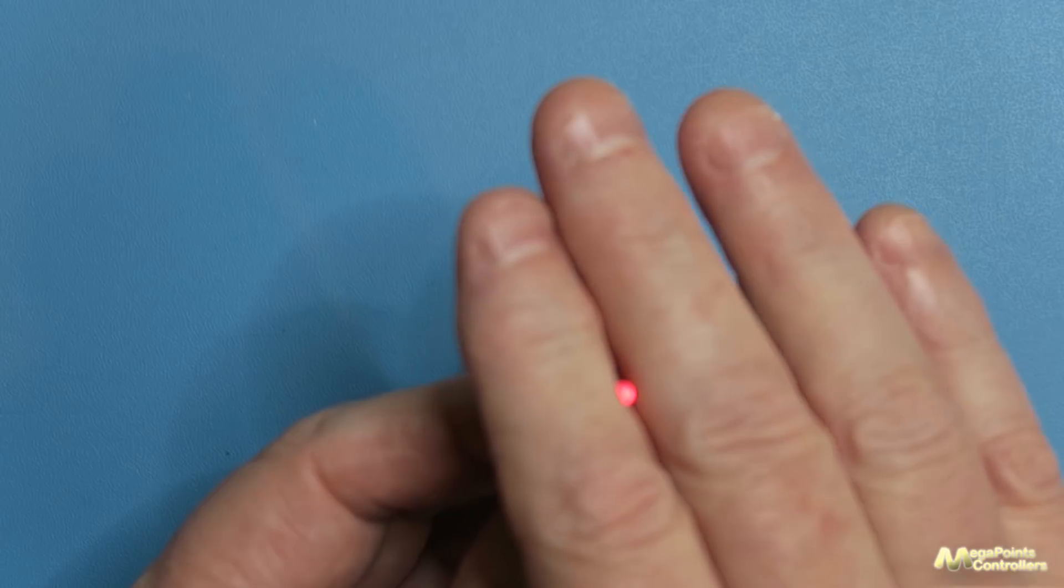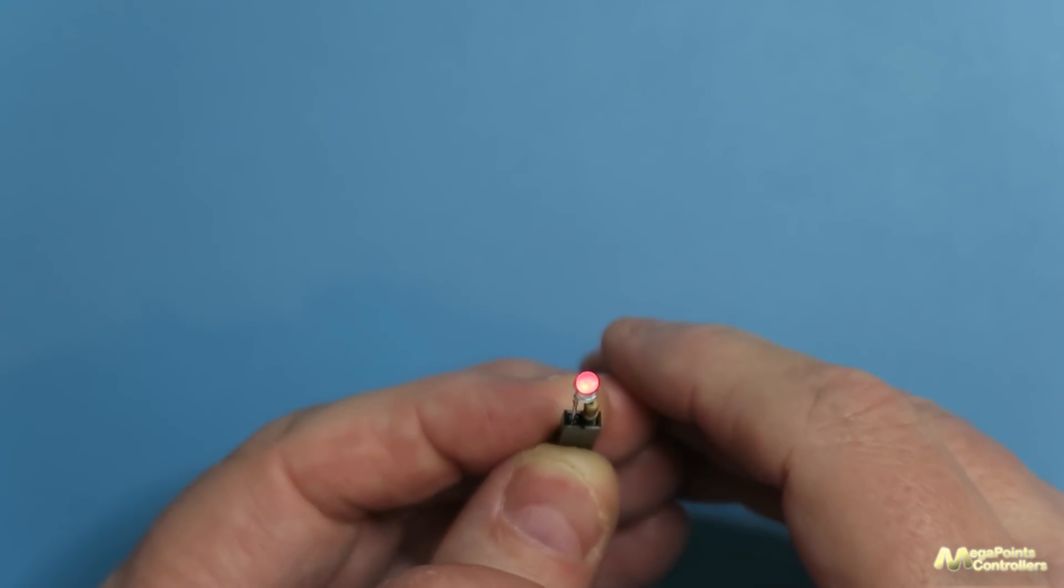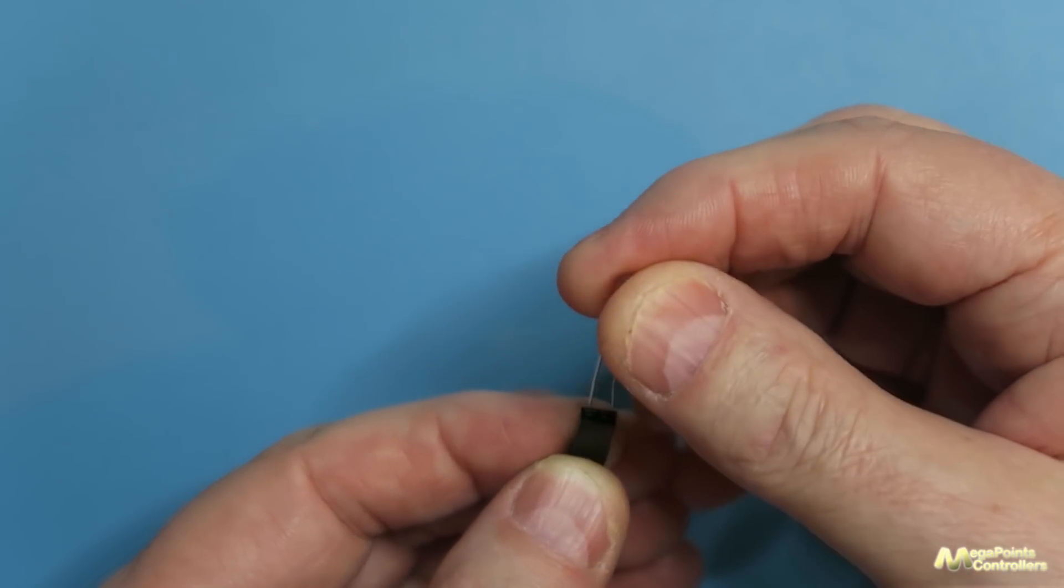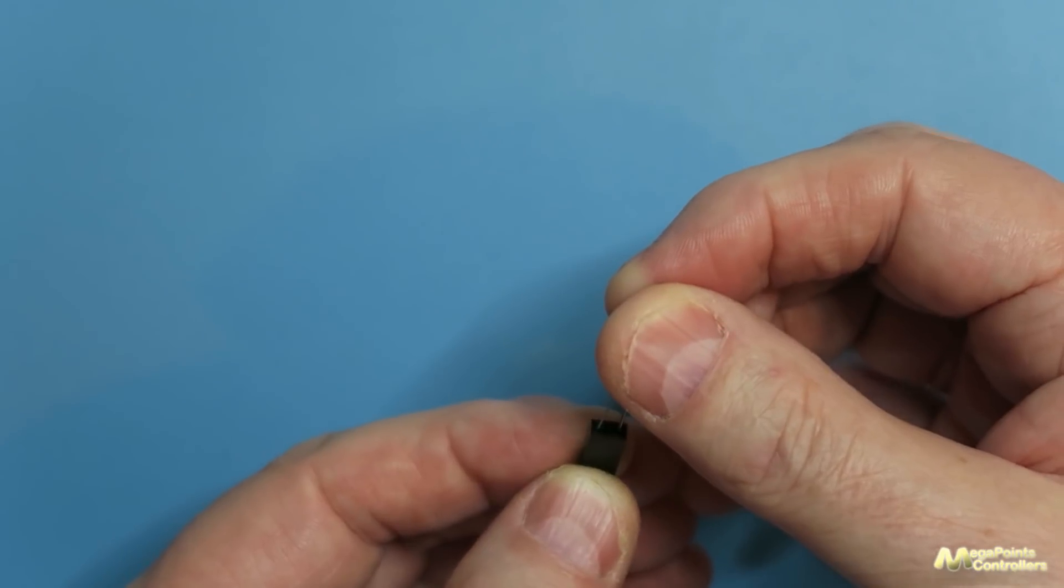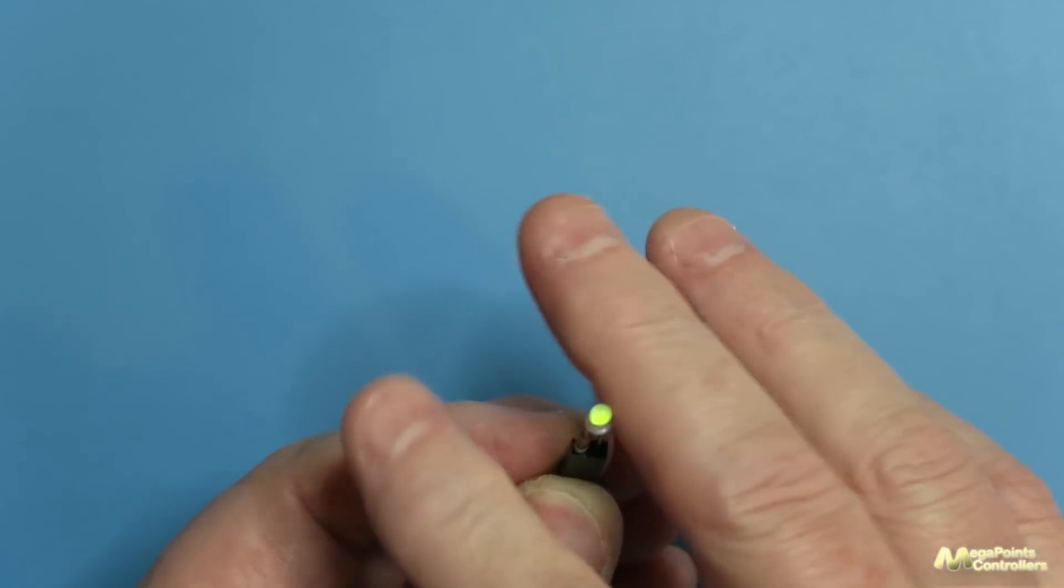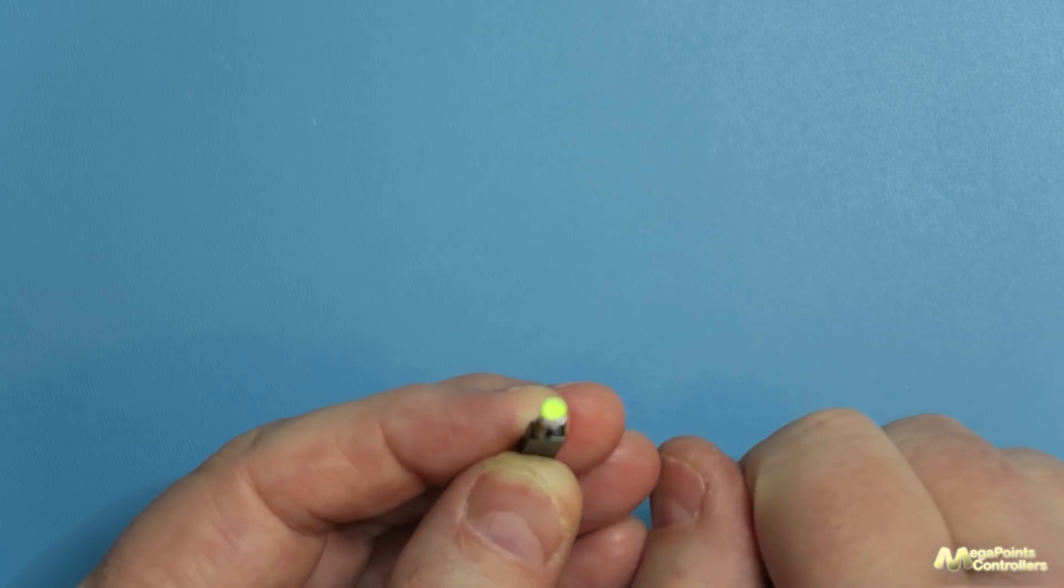So if I connect it one way round we have red showing, come on focus, as the red light and if I pull it out and reverse it you can now see we have the green showing.